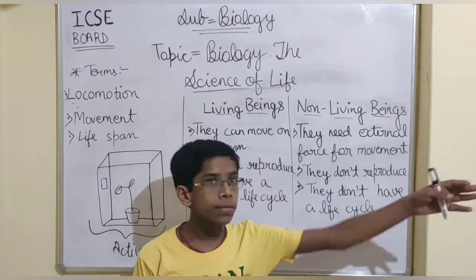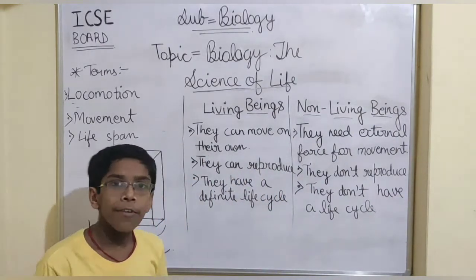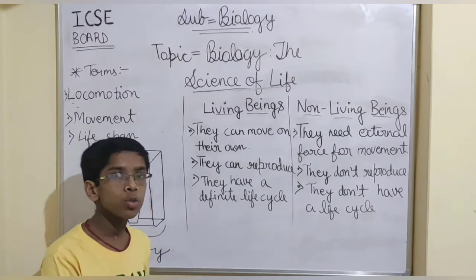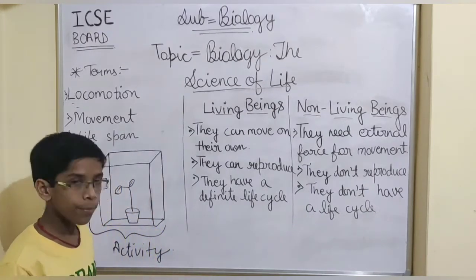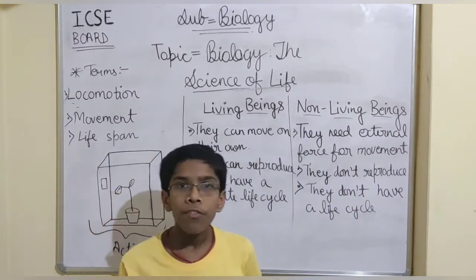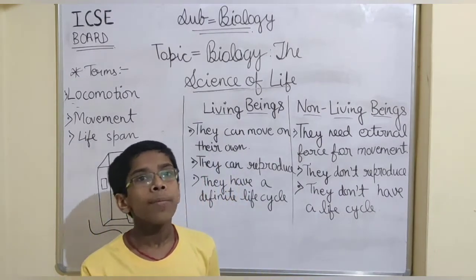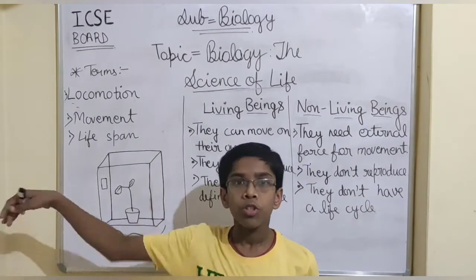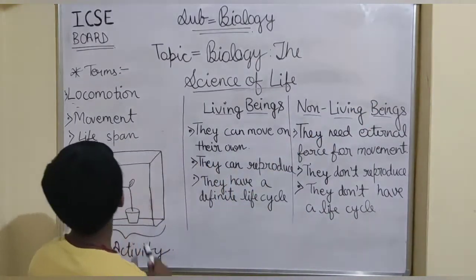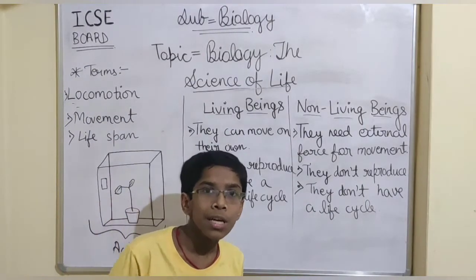See, I am moving my hand — it is moving now. If I have to do locomotion, locomotion is moving from one place to another place. Like, I am in this place, now I am moving to this place. So, moving from one place to another place is known as locomotion, and moving different parts of our body is known as movement. Understand the difference between locomotion and movement.